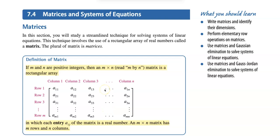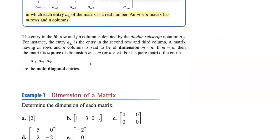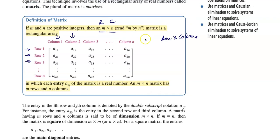We call a matrix n by n — we go row by column. That's the size of the matrix. Rows go horizontally, and columns go up and down. The number of rows and the number of columns define what we call an n by n matrix. Each value is called an entry in the matrix. The dimension of a matrix is row by column.